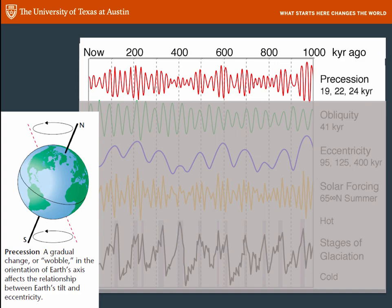So, this calculation in this particular graph goes back a million years. That's 1,000 thousands. So, if you look at that top scale, you have now on the left, and 1,000 KYR, 1,000, 1,000 years ago. That's a million years. But you can calculate orbital variations going back as far in time as you want, and as far forward in time as you want.